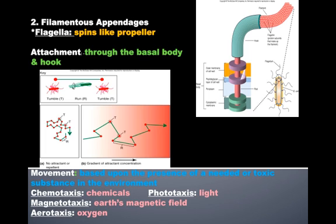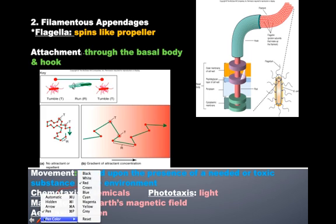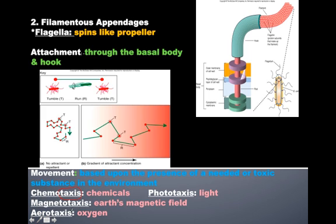Chemotaxis is movement in response to chemicals. A memory trick: the word 'taxi' is in there — think 'catch a ride,' meaning movement. Phototaxis is movement in response to light. Magnetotaxis is movement in response to the Earth's magnetic field. Aerotaxis would be movement towards oxygen — so if it's an aerobic bacteria, it needs oxygen and will move towards it. If it's photosynthetic and needs light, it will move towards it.